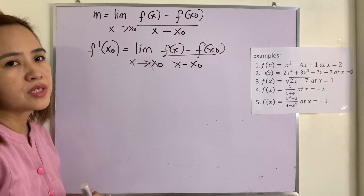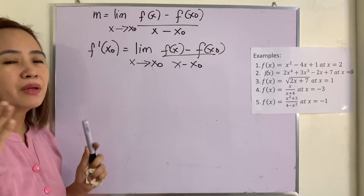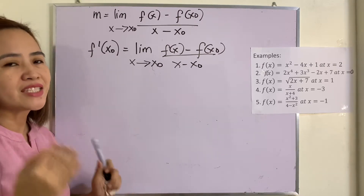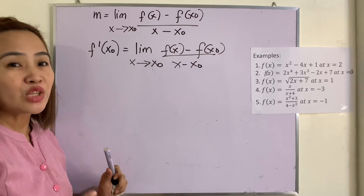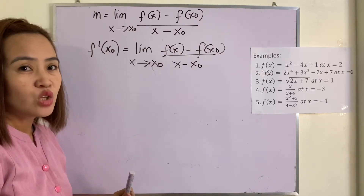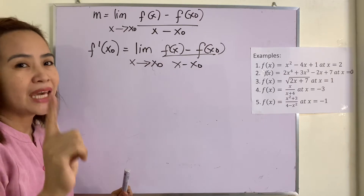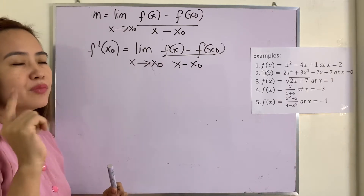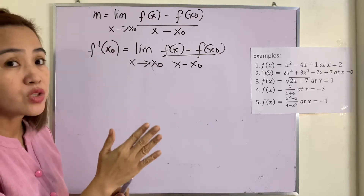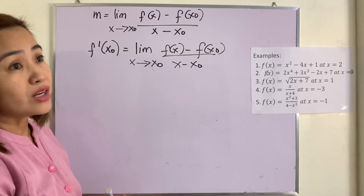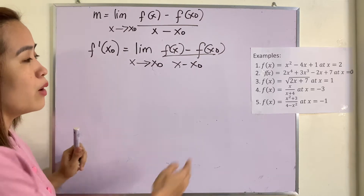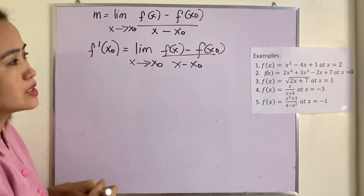Meaning to say, when we compute the derivative of a function, we are just getting the slope of the tangent line to the given function. Remember that the tangent line should be tangent to the graph of the given function. They are the same. So, how are we going to evaluate this one?